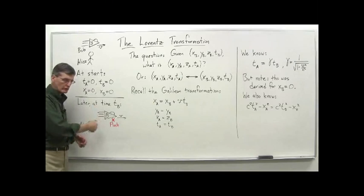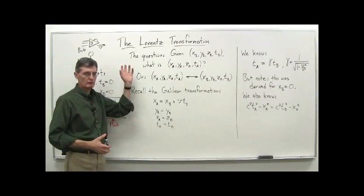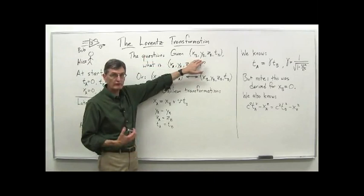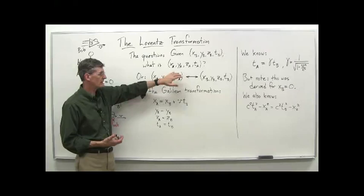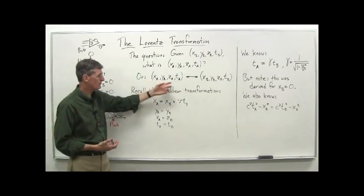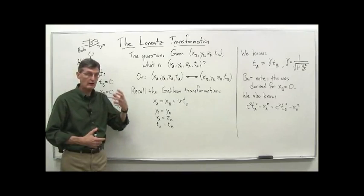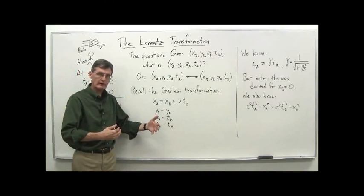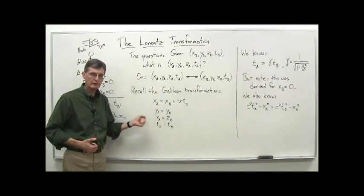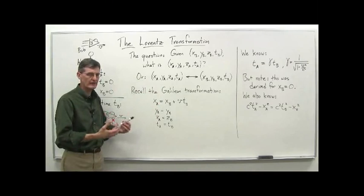We'll get to this later — at time T sub B, there's a flash of light. Here's the basic question: given the space-time coordinates of an event in Bob's frame of reference — X sub B, Y sub B, Z sub B, and time T sub B — what would the coordinates be for Alice: X sub A, Y sub A, Z sub A, and T sub A? In general, we'd like to go back and forth between the two coordinate systems. It's nice to have a formula, and that's what the Lorentz transformation is going to give us.